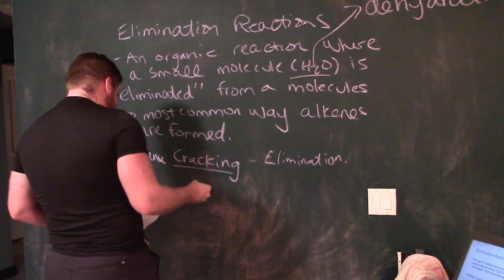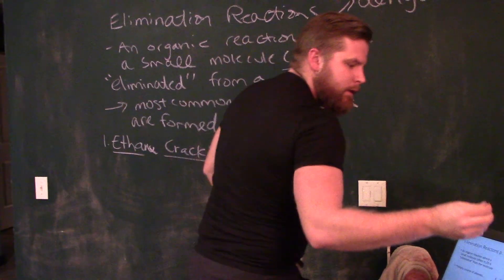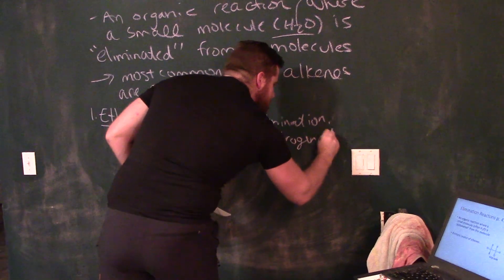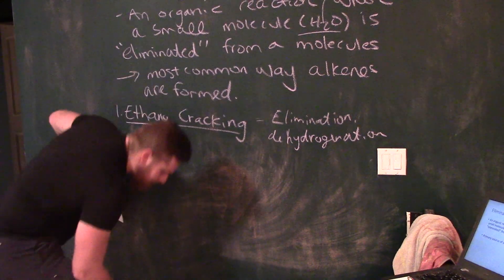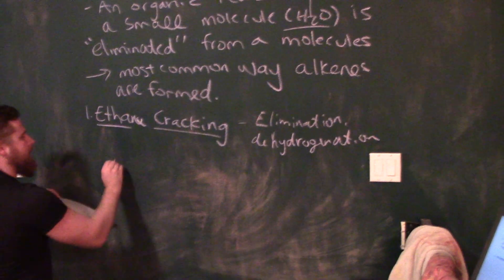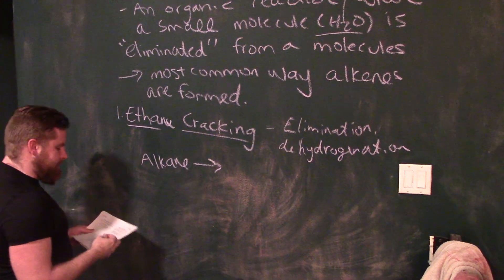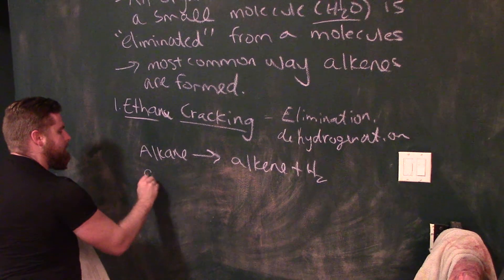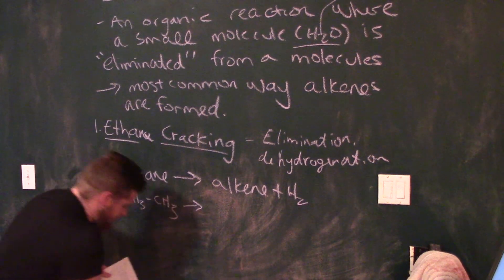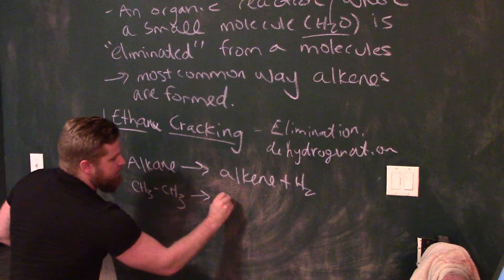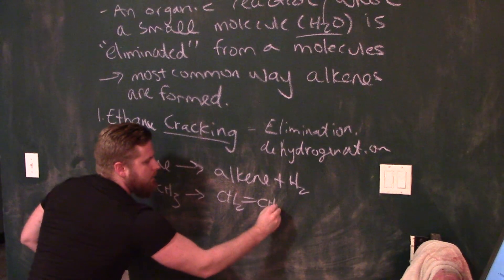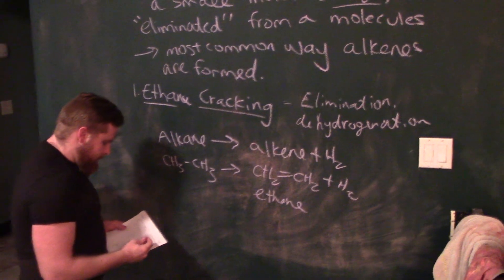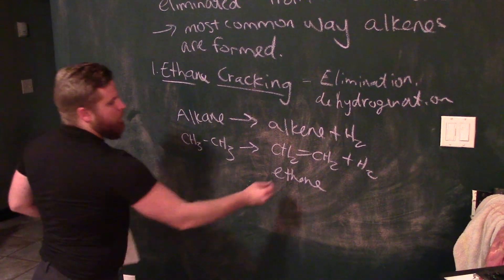So as a general formula, I'm going to start with an alkane and make an alkene plus hydrogen gas. Specifically, I'm going to start with ethane and use catalysts to make ethene plus H₂ gas. So this is one way to make alkenes. As I mentioned, we can also synthesize alkenes from alcohols.